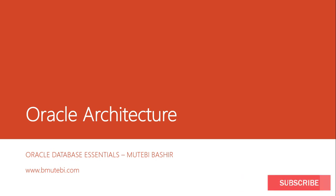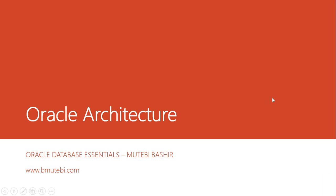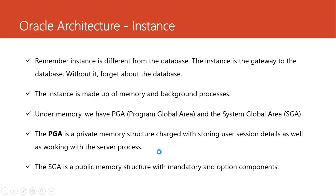Welcome back. Continuing from where we left off, we are still on the Oracle architecture. Remember in the previous section, we saw how users get connected to the database, and we saw the different processes that start — the server process, the user process on the device, then the server process, and the PGA.